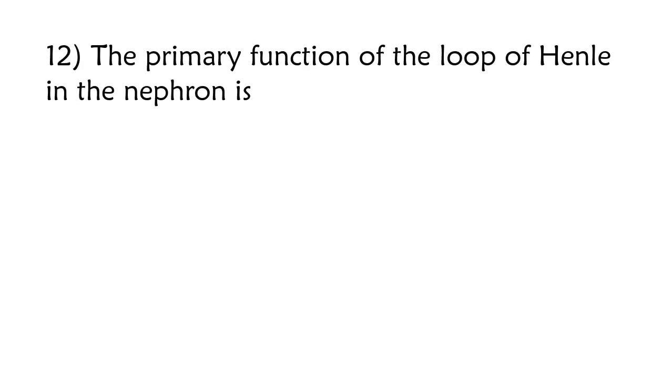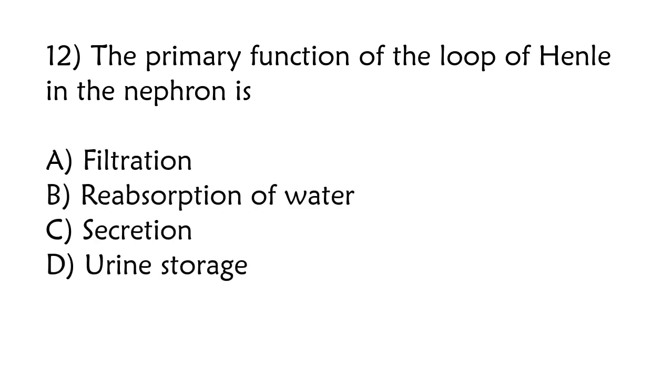The primary function of the loop of Henle in the nephron is filtration, reabsorption of water, secretion, urine storage. The correct answer is option B, reabsorption of water.